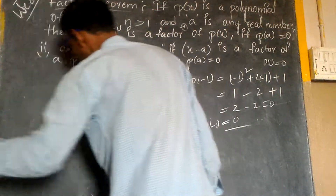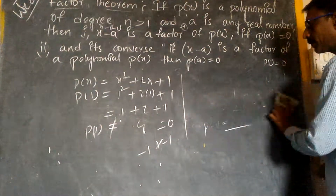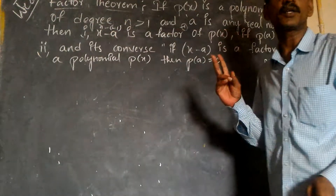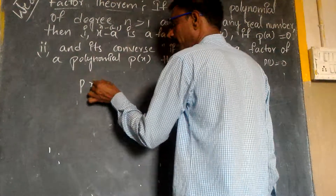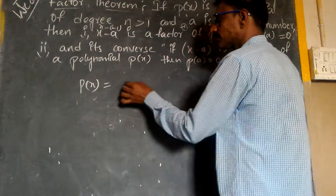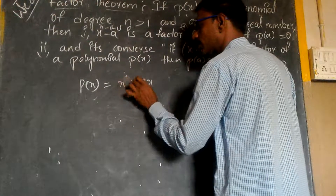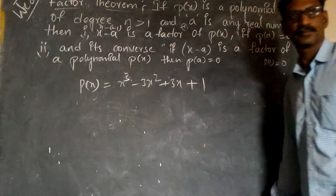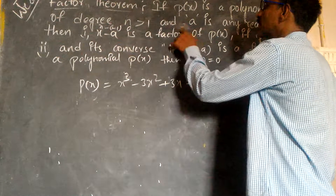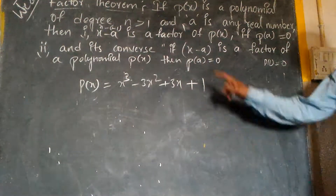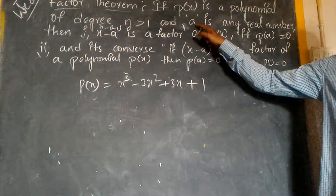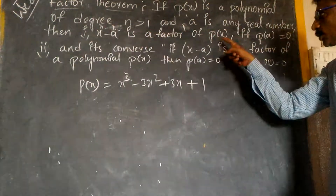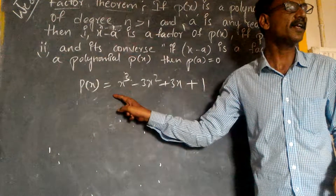Suppose if you take some other example. I would like to take now a third degree polynomial. p of x is equal to x cube minus 3x square plus 3x plus 1. Again I would like to take the real number a equal to 1. Then x minus 1 should be a factor of p of x.